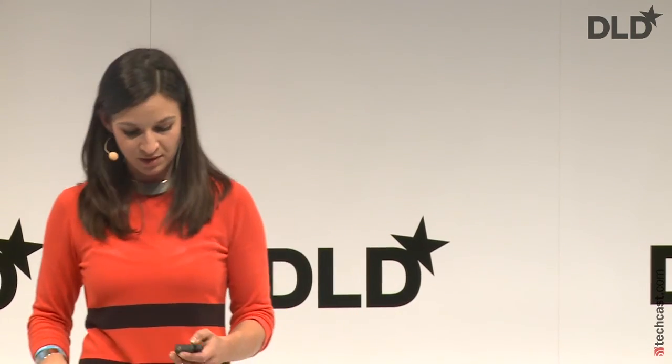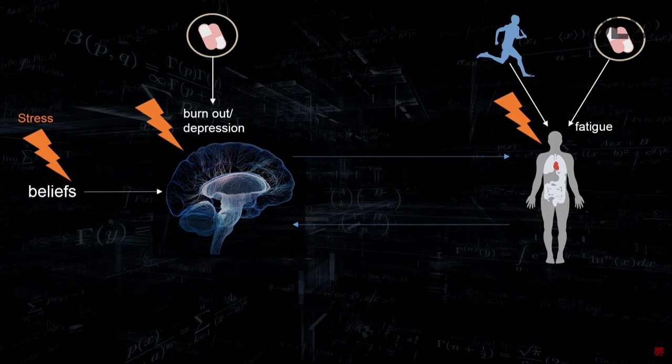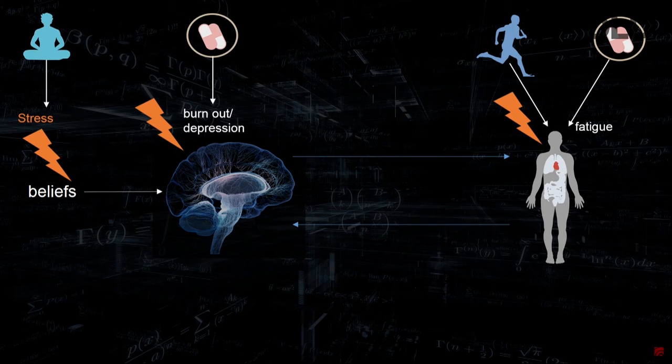Sometimes it's actually good to treat someone at the level of the body if they were actually sick. But maybe it's an imbalance in the neurotransmitter systems, and then we should use drugs. Or maybe it has to do with beliefs or stresses in the external world, and then we should target that with things like cognitive behavioral therapy.